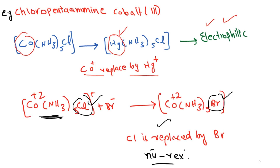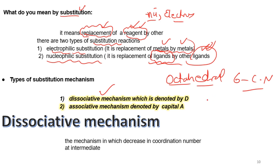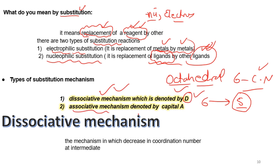There are two types of substitution mechanisms. One is the dissociative mechanism, in which the coordination number in the intermediate state decreases. We are talking about octahedral complexes that involve a six coordination number. When we go from a six coordination number complex to a five coordination number intermediate state, the coordination number decreases, and this is known as the dissociative mechanism, denoted by D.